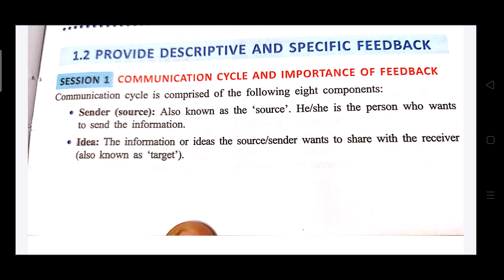The first component is source or sender — he or she is the person who wants to send the information. The second is idea, which means the information the source or sender wants to share with the receiver. The receiver is also known as the target, and the idea is also known as information.